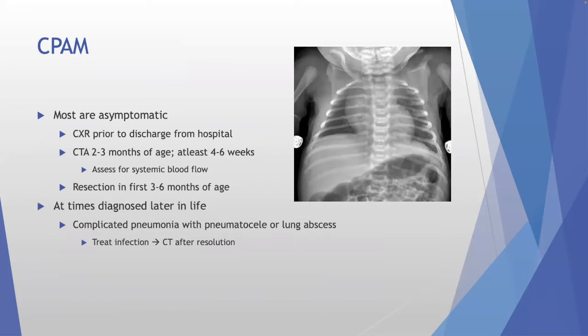Postnatally, most CPAMs are asymptomatic. We get a chest X-ray prior to discharge — not immediately at birth since the baby is still transitioning, but just before discharge — to confirm nothing alarming is visible. If asymptomatic, you're not expecting to see anything on CXR. Then a CT angiogram is obtained at two to three months of age; the baby needs to be at least four to six weeks old.